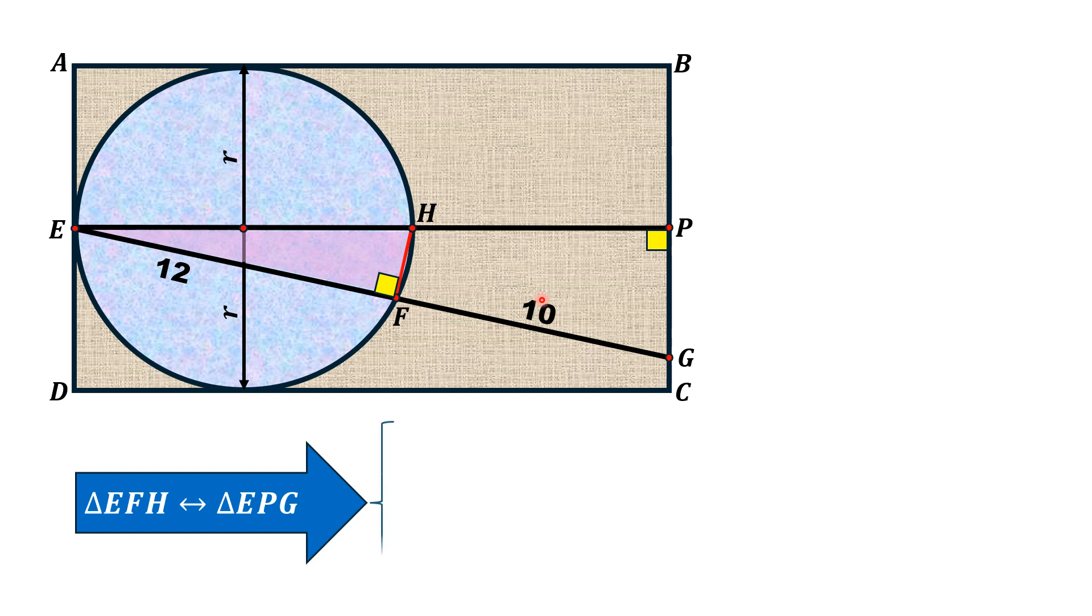From these two triangles, we have this angle at point E is the same. The angle HEF is equal to angle PEG because this is the same angle.